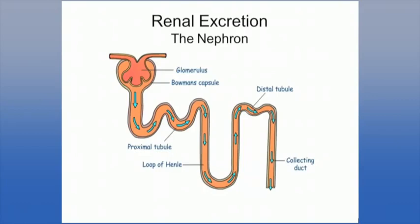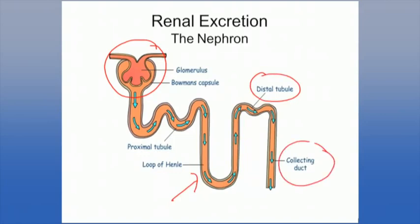The nephron contains multiple different functional parts. The first is the glomerulus. In addition, there is a long piece of tubing divided into a proximal tubule, a loop of Henle, a distal tubule, and a collecting duct. All of the collecting ducts ultimately deliver their product — urine — into the ureter for ultimate excretion.